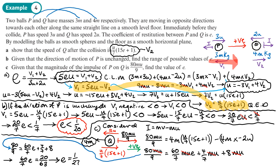So e equals 1 over 27 is the final answer. This fits with what we found in part b — e must be less than 1 over 20, and 1 over 27 is indeed less than 1 over 20. If I'd got a value greater than 1 over 20, that would indicate an error.